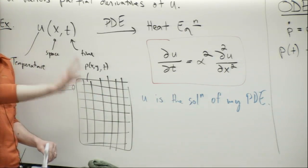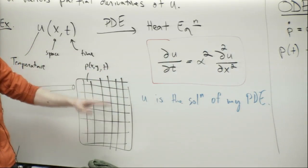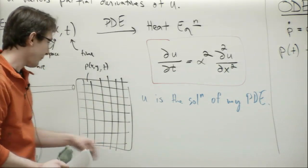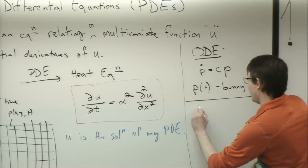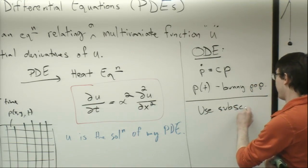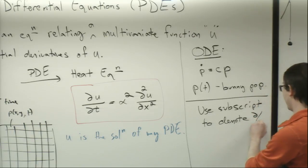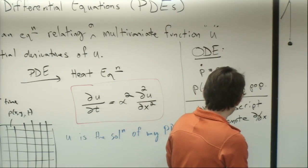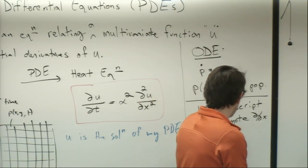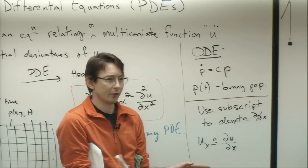This is how we're going to simulate these kinds of partial differential equations — we box them up and write them as a bunch of ODEs. I'll also use subscript notation to denote partials: u_x means ∂u/∂x, and u_t means ∂u/∂t.